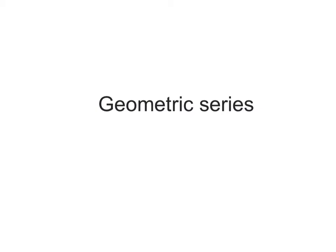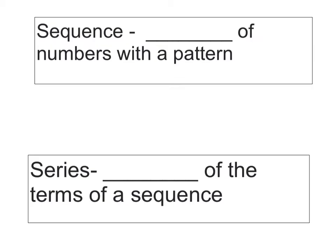Time to get started with a little review of geometric series. In our previous lesson, we discussed a sequence and a series. To review: a sequence is simply a list of numbers with a pattern, and a series is the sum of the terms of the sequence.